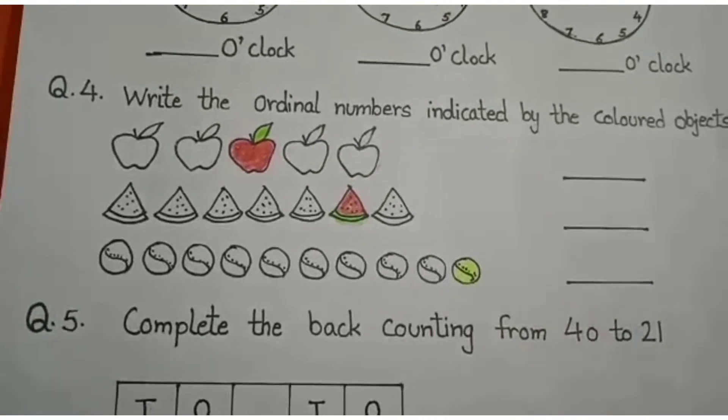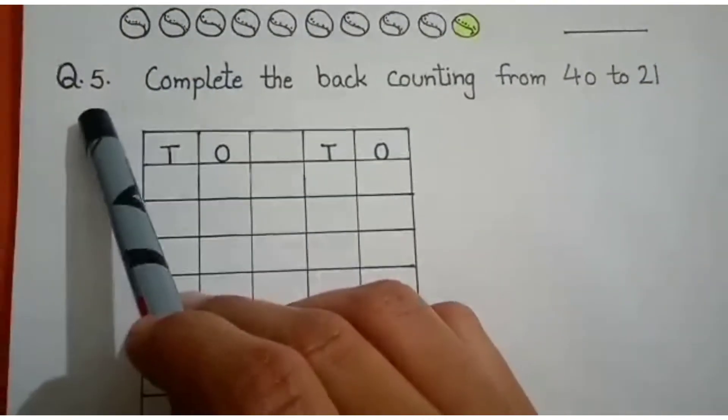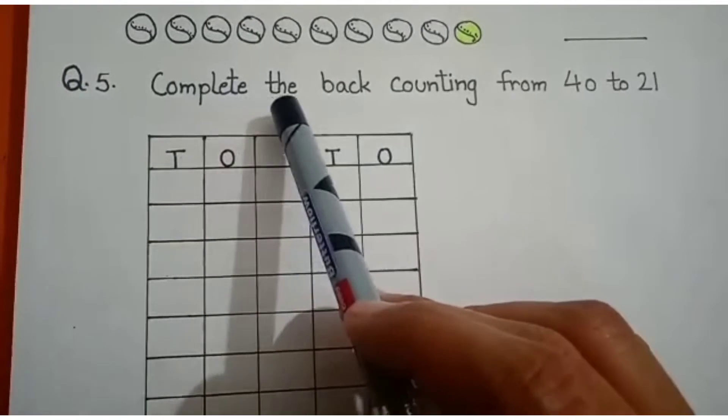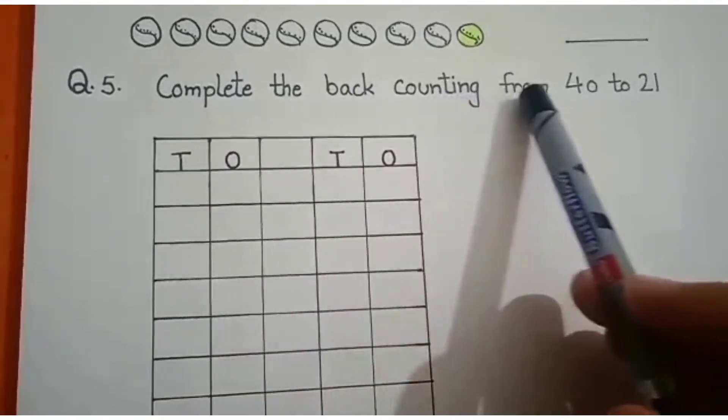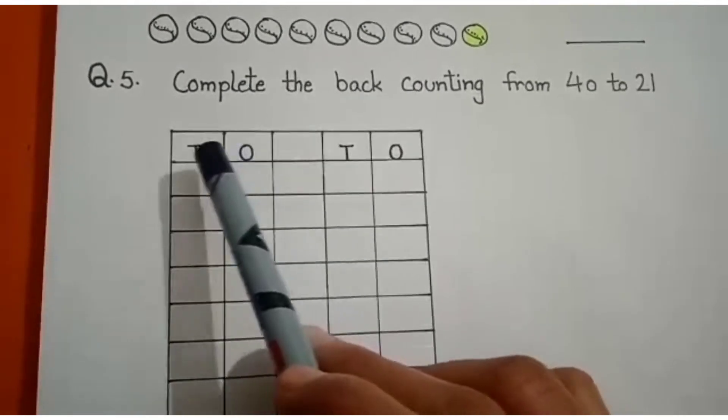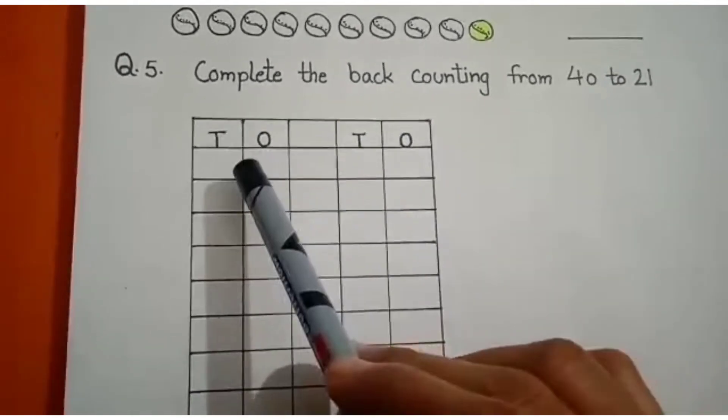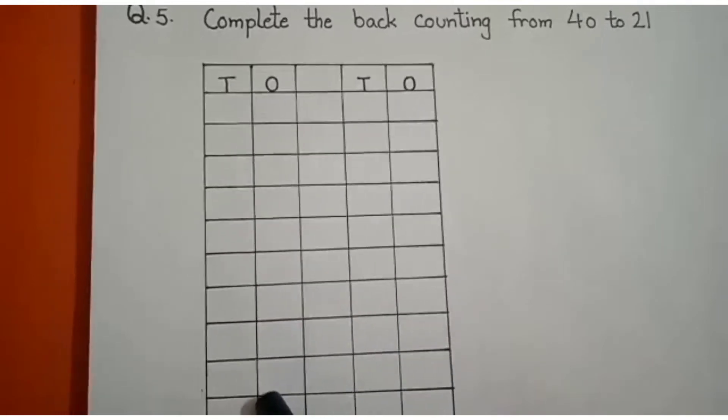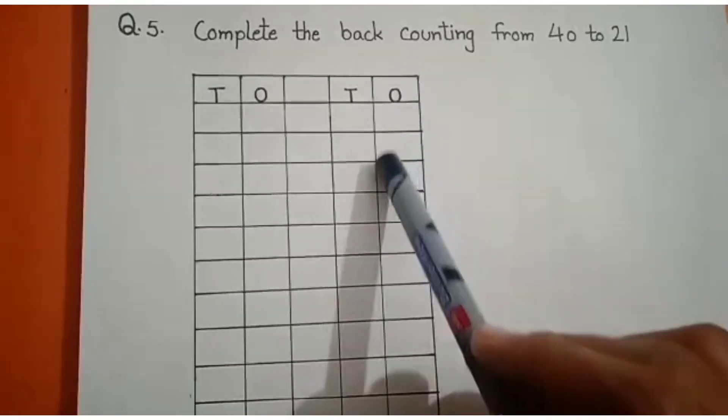Next question, question number 5 is: Complete the back counting from 40 to 21. Look here. You have to write the back counting from 40 to 21.